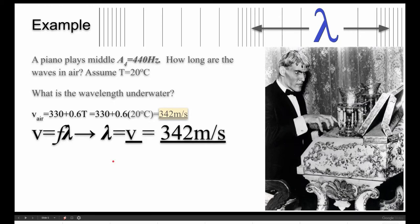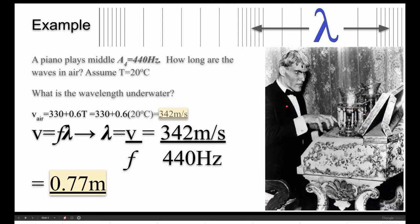Since speed is F lambda, and lambda equals V over F, then in this case, we get 342 meters a second, over 440 hertz, and we get a sound wavelength of 0.77 meters. So pretty much, that would be about, from his chest to the sheet music he's looking at, almost a meter between compressions.